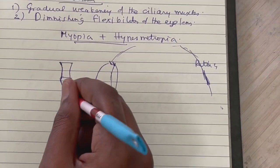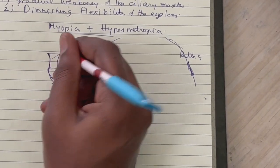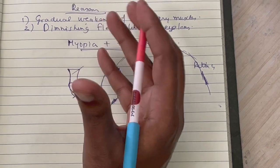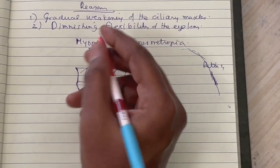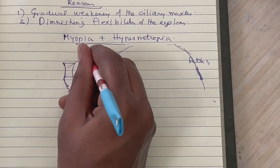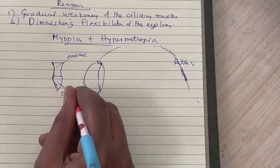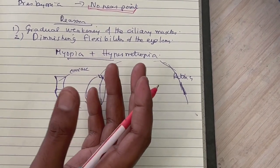So you can call it a bifocal lens. Here this is the concave part; this is the convex part.